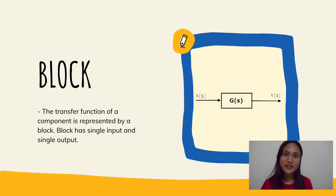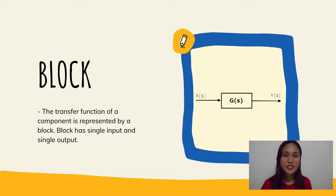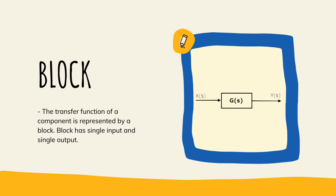The first element of a block diagram is a block. The transfer function of a component is represented by a block. It has a single input and a single output. The figure shows a block having an input X(s), output Y(s), and transfer function G(s). The transfer function G(s) is equal to Y(s) over X(s). The output of the block is obtained by multiplying the transfer function of the block with the input.